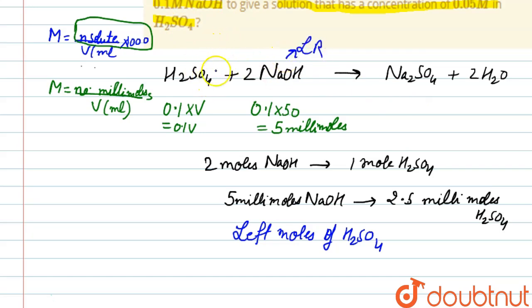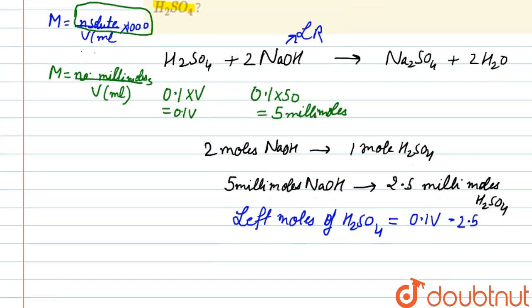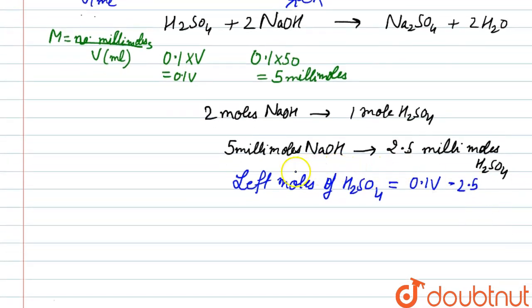So left moles of H2SO4 will be total moles, that is 0.1V, we supposed the volume of solution be V, minus used moles that is 2.5 millimoles. Now these are the millimoles.